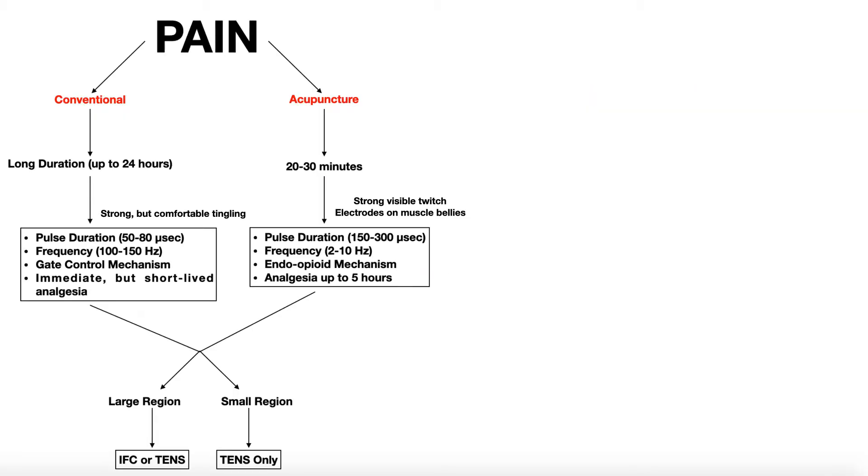What we really should be thinking about is what setting we're going to run the TENS or the IFC on. Am I going to run TENS or IFC on a conventional setting, or an acupuncture-like setting, sometimes just called the acupuncture setting. Whether or not I'm going to use conventional or acupuncture settings depends on a couple of things. Number one is how long I can have the machine hooked up to a person or myself. I can use the conventional setting with two to three hours.